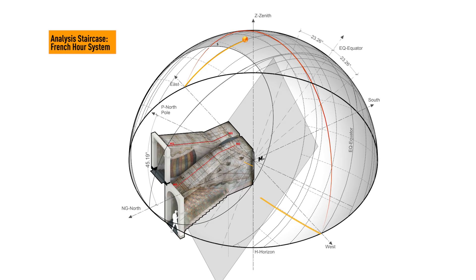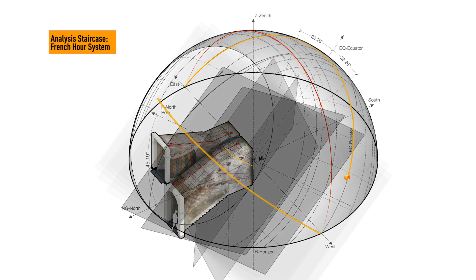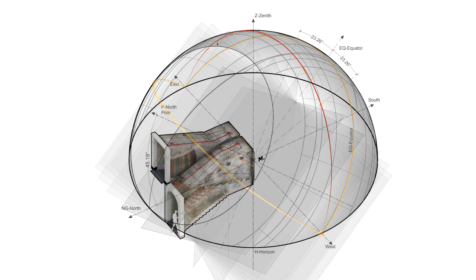The astronomical hour lines, also known as French hours, are established through the intersection between the interior surfaces and the rotating plane surface.